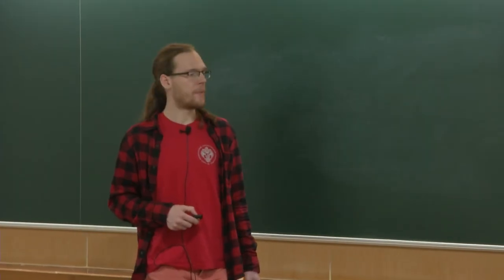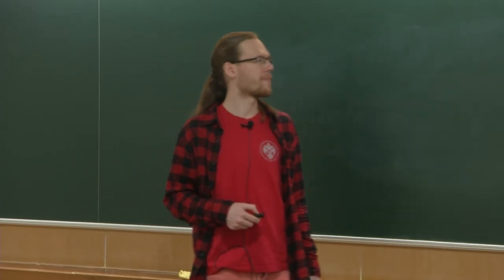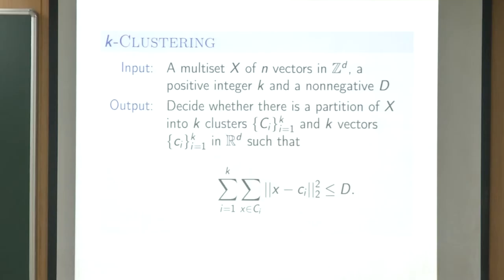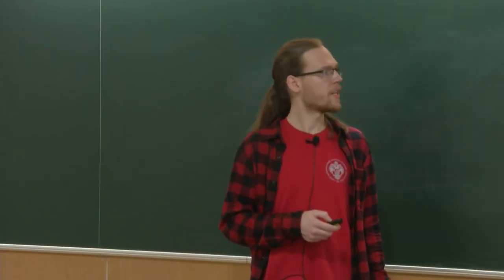Formally, can we partition these points into k clusters — k subsets of the points — and find k vectors in R^d such that the sum of distances (summing over all clusters, and within each cluster summing distances from each point to its cluster center) is at most D? This is defined for k-means using the squared Euclidean norm.